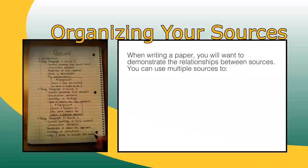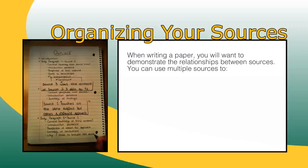When you are thinking about the ways in which to associate your sources, consider what they might be able to do for one another. A source might, for example, bring newer or stronger evidence that would strengthen a claim or substantiate an assumption in another.